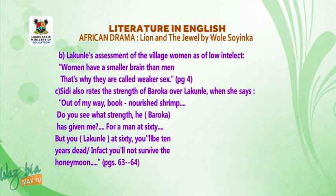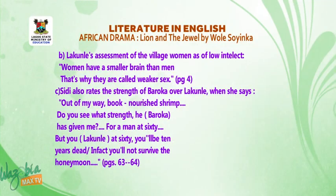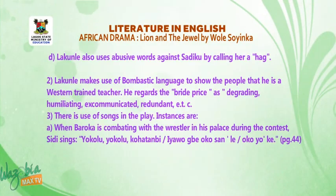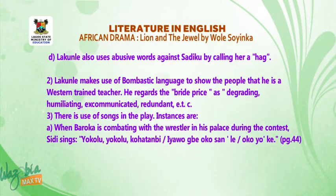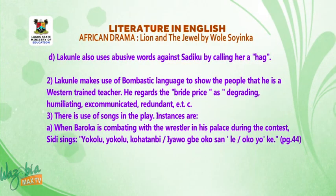Another example: Sidi rates the strength of Baroka over Lakunle when she says, and I quote: 'Out of my way, book-nourished shrimp. Do you see what strength he — Baroka — has given me? For a man at 60, for you, Lakunle, at 60 you'll be 10 years dead. In fact, you will not survive the honeymoon.' End of quotation. Lakunle also uses abusive words against Sadiku by calling her a hag. Another stylistic device is Lakunle's use of bombastic language to show he is a Western-trained teacher — he regards the bride price as degrading, humiliating, excommunicated, redundant, and so on.